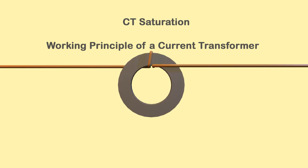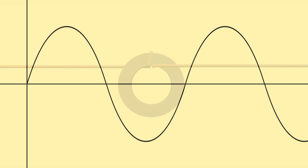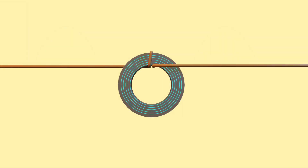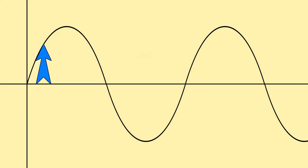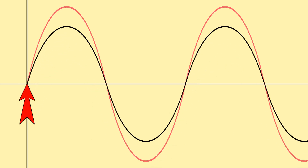When we connect the CT primary in series with the load line, the current flowing through the CT primary is nothing but the current in the load line or the electrical line. Now suppose the load line carries a pure sinusoidal current — that means the CT primary current is pure sinusoidal. This current creates a magnetic field in the CT core which in turn produces magnetic flux in the core. As the current increases, the flux also increases, and when the current decreases, the flux also decreases. So the flux due to the primary current follows the waveform of the CT primary current, and it also has a pure sinusoidal waveform.